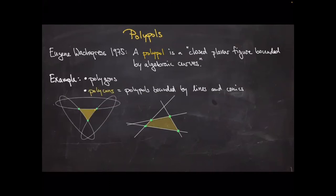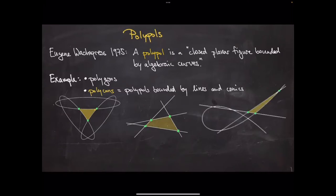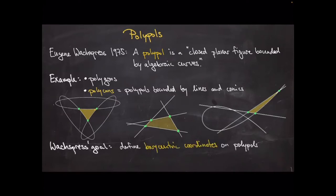The easiest example is polygons, and he wanted to see polypoles as a natural generalization of polygons. An important class was so-called polycons, where you have polypoles bounded by lines and conics — here on the left is an example bounded by three ellipses. There are also more general polypoles, like the yellow triangular region on the right bounded by two lines and a cubic curve.